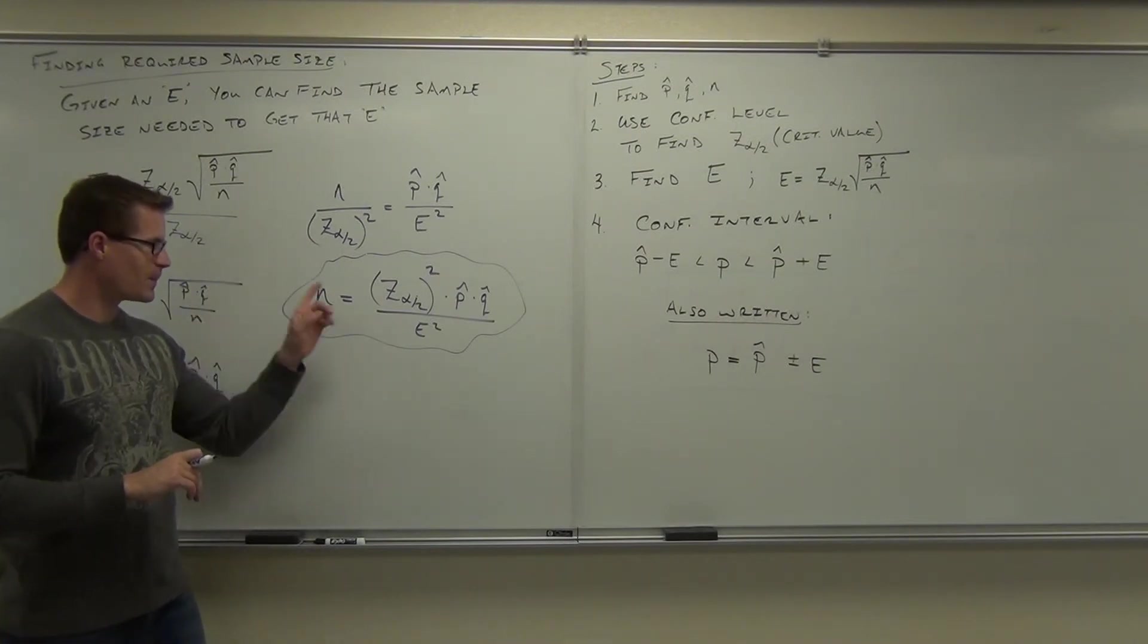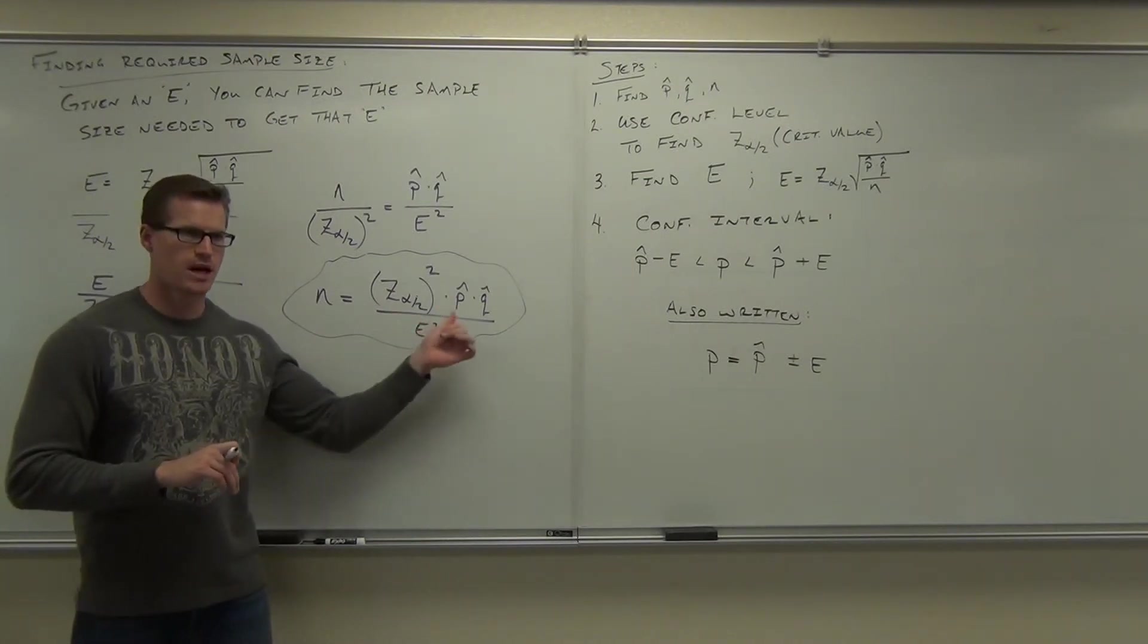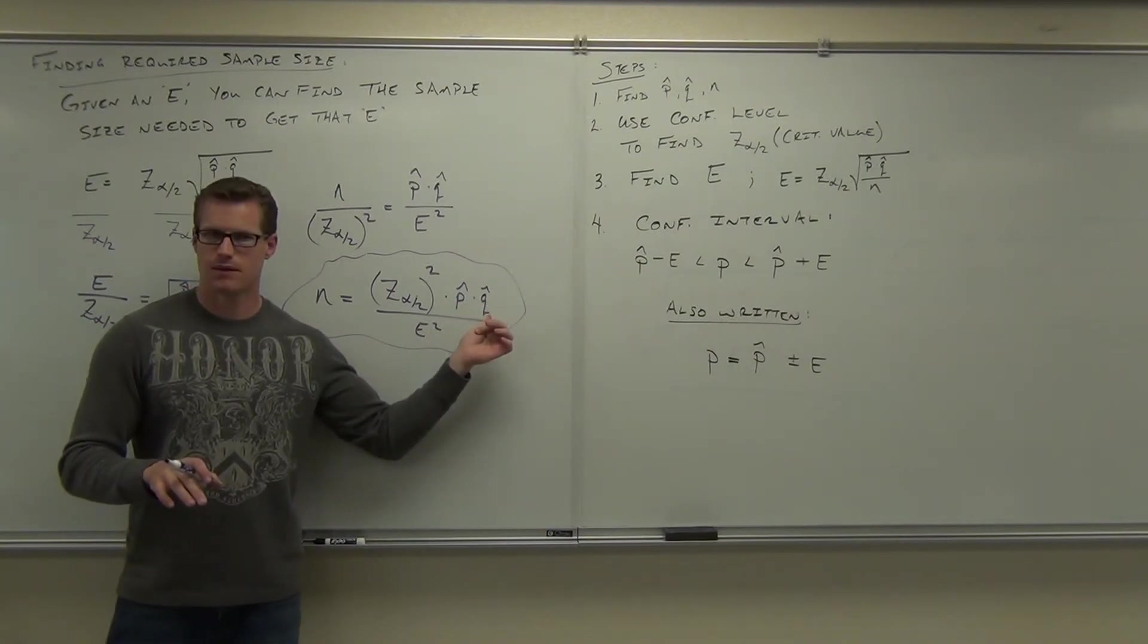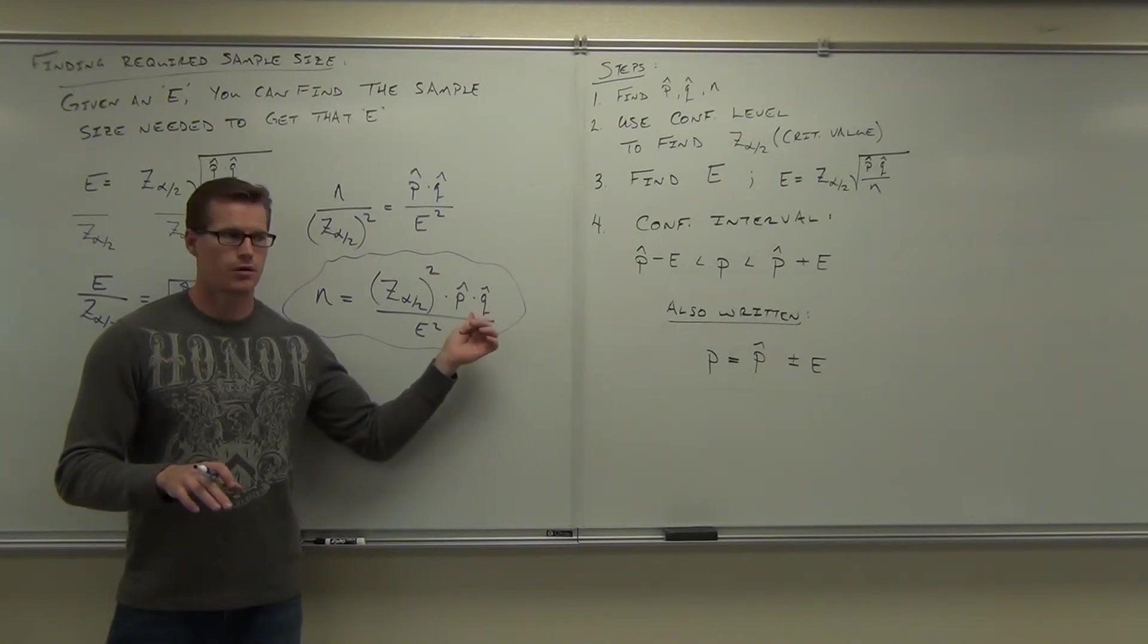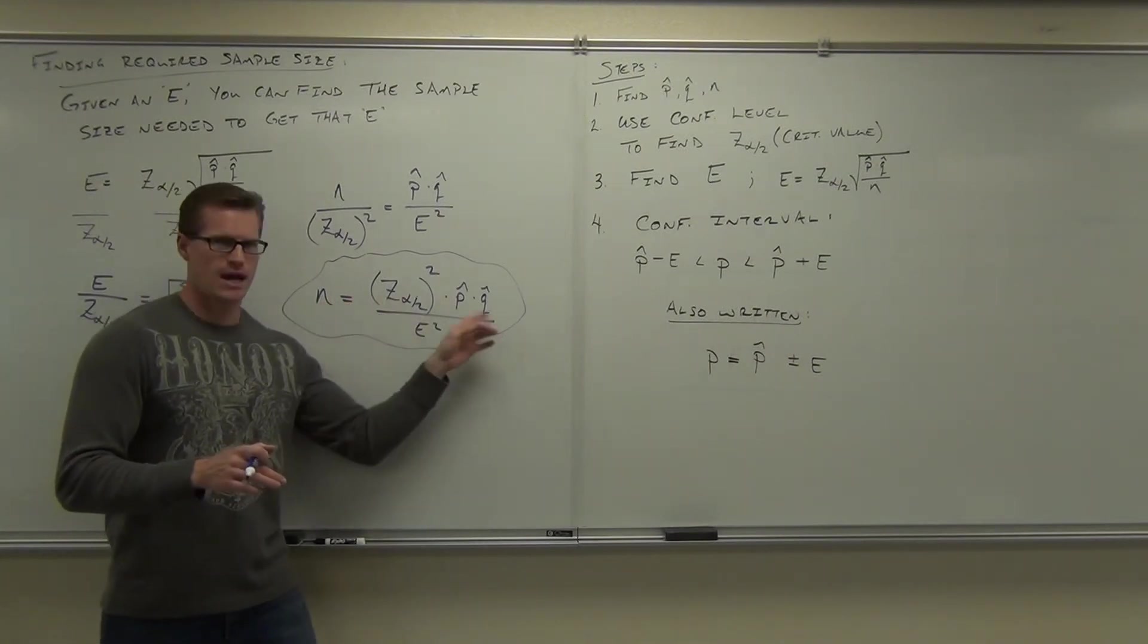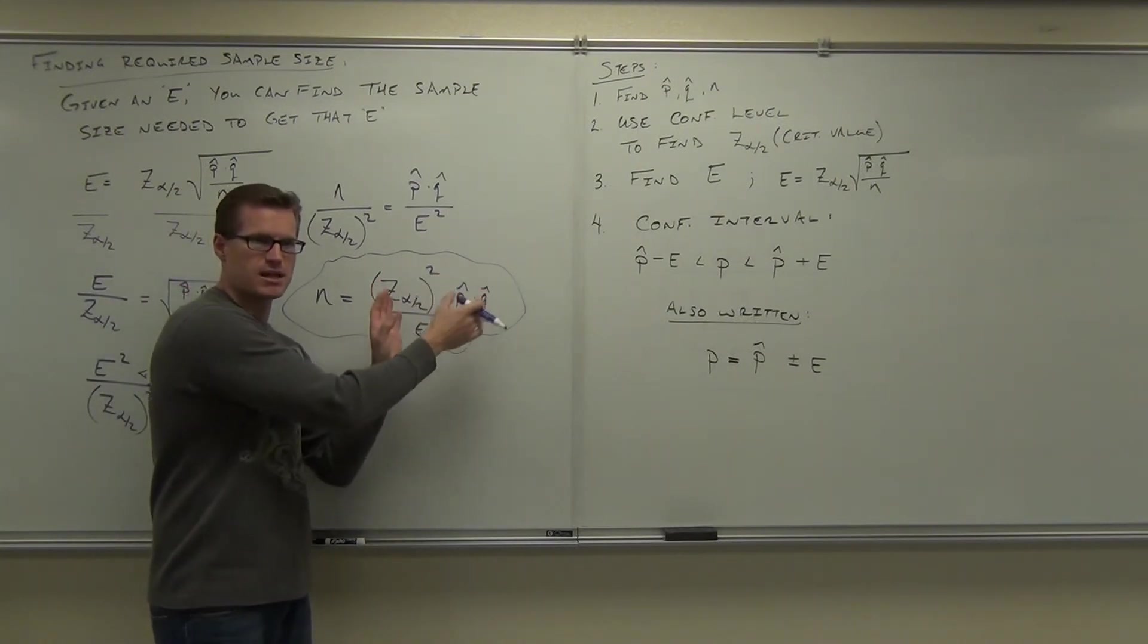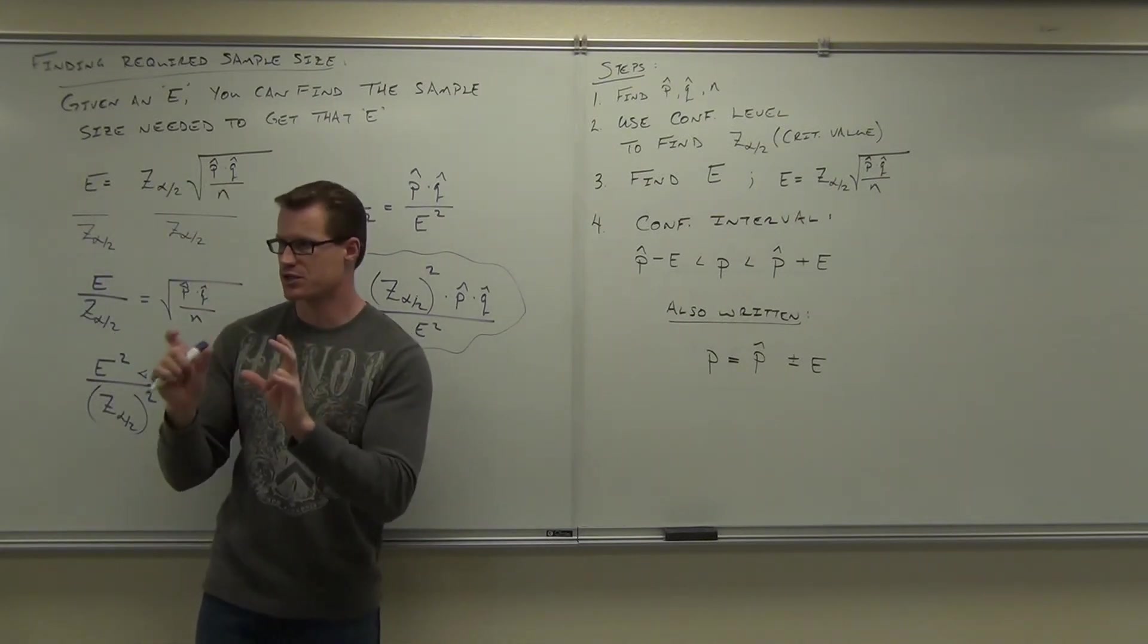Here's option number one. If you know P hat and Q hat, you can find the sample size to make your E happen. However, this should never happen. What are P hat and Q hat? They're from a sample. So you're going to find the sample size needed by already having a sample? Does that make sense? No. So you're going to use the worst case scenario in most times. If you have the P hat and Q hat, great, this is the best case scenario.